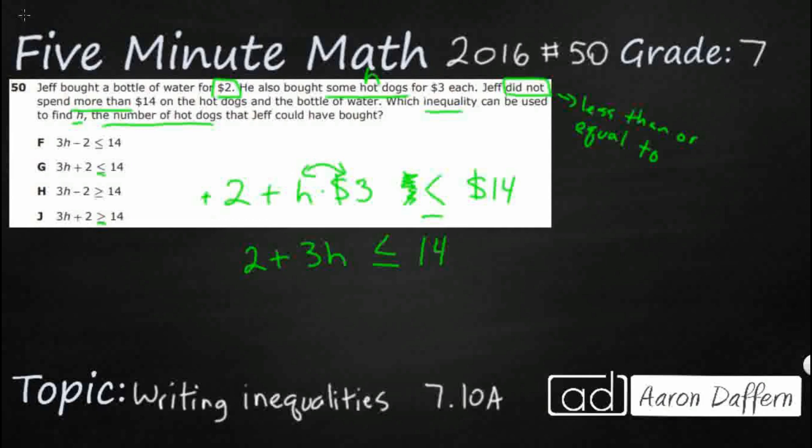So the $2 for the bottle of water plus $3 per hot dog is going to be less than or equal to 14. So it looks like if I were to flip these two right here, we could say 3H plus 2 less than or equal to 14, looking like G.